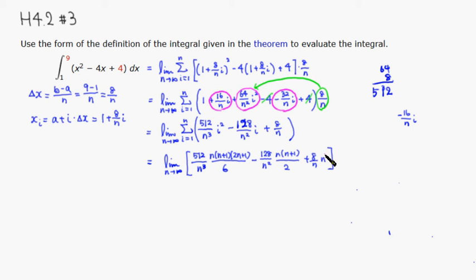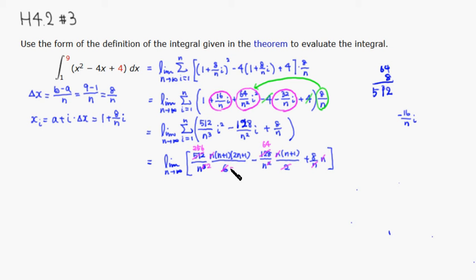We can clean things up. An n on top cancels an n on the bottom throughout. For the i² term, we get 512/n³ · n(n+1)(2n+1)/6. Dividing 512 by 2 gives 256, and keeping the 6 in the denominator gives 256/3. Similarly for the other terms.